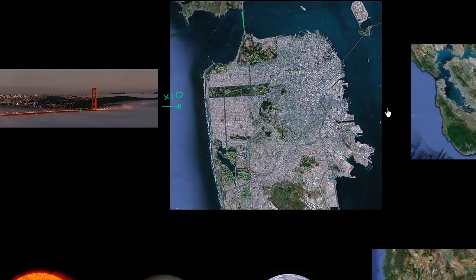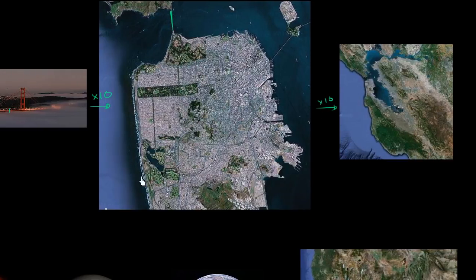If you multiply by 10 again, you get to something roughly the size of the San Francisco Bay Area. This whole square over here is roughly that square right over there. Let's multiply it by 10 again.